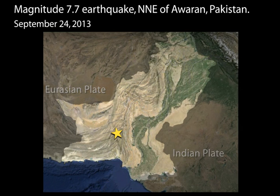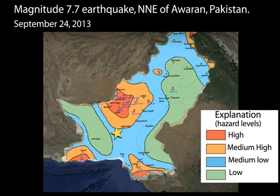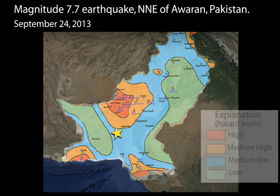A hazard map of greatest damage shows regions that have been particularly vulnerable to earthquakes. Although the earthquake fell within a medium zone, 30% of the homes in the area were destroyed and dozens were killed.